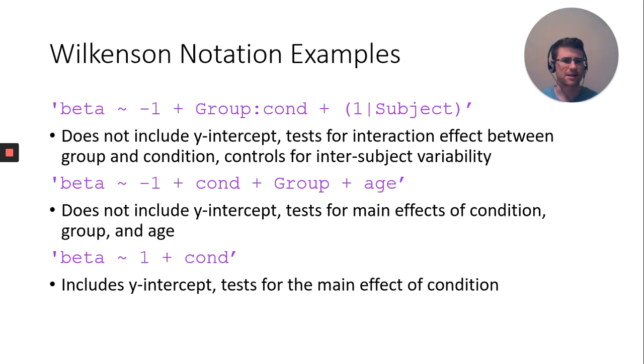Beta squiggly negative one plus group colon condition plus the one in parentheses grouped by subject. This does not include a y-intercept, denoted by the negative one. It tests for the interaction between group and condition, and controls for inter-subject variability.